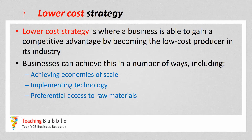The first generic strategy is the lower cost strategy — remember, you may see this as cost advantage or cost leadership. It's where a business is able to gain a competitive advantage by becoming a low cost producer in its industry. Businesses can achieve that in a number of ways; I've just got three examples here. One is operating on a large scale and producing in large quantities to achieve economies of scale.